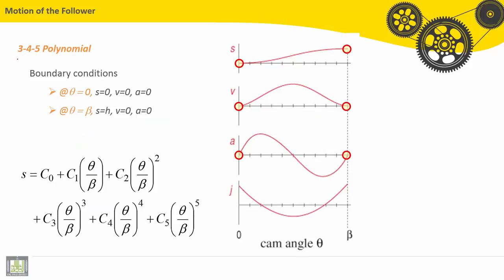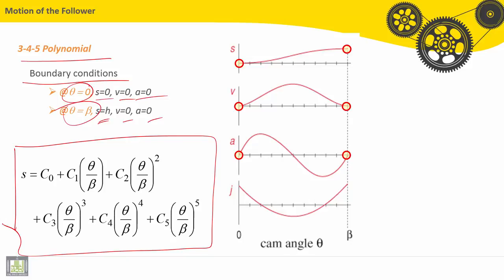Let's see here with 3, 4, 5 polynomial function. Boundary conditions are the following: At theta equals 0, position, velocity, and acceleration are equal to 0. When theta equals beta, the position is equal to h, and velocity and accelerations are set to 0. Here we have the 3, 4, 5 polynomial function.